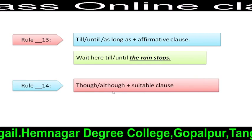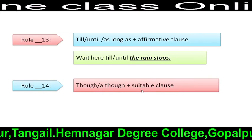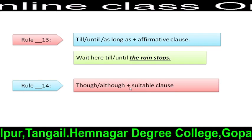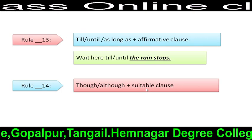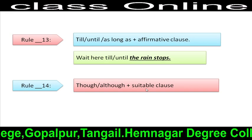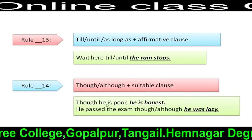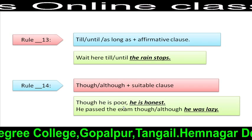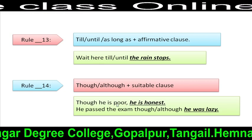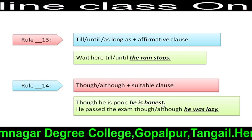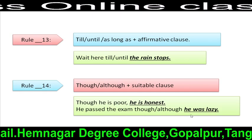Rule 14: Though/although + suitable clause with opposite meaning. That means, in this kind of complex sentence, we have to use a clause with opposite meaning. For example: 'Though he is poor, he is honest.' Here, the man is poor, and the opposite meaning is honest — a negative adjective and an affirmative adjective. 'He passed the exam though or although he was lazy.' Here, 'he was lazy' carries the opposite meaning.